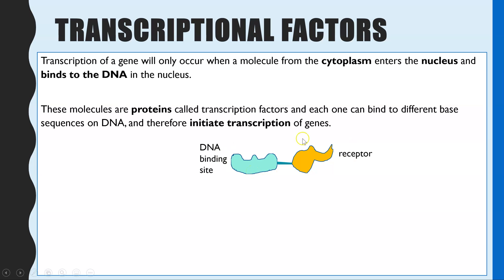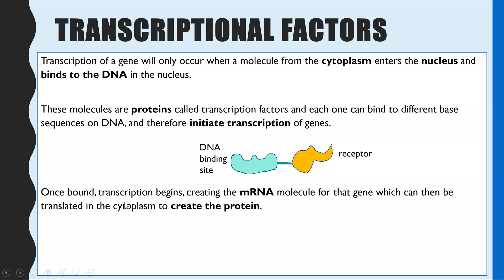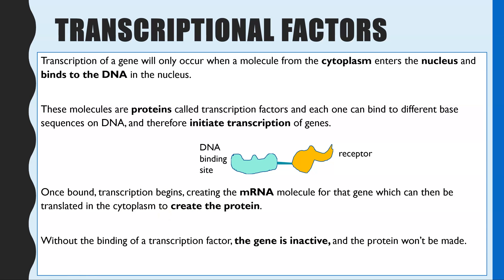A transcriptional factor is a 3D shaped protein. One part of the protein will bind to the DNA, and another part of the protein is often a receptor for another molecule to attach to before it can then attach to the DNA. Once the transcriptional factor is bound, RNA polymerase can bind to the DNA and an mRNA sequence is created — a copy of that particular gene — which can then move into the cytoplasm, attach to a ribosome, and the polypeptide chain is created. Unless the transcriptional factor is bound, the gene is turned off or inactive.